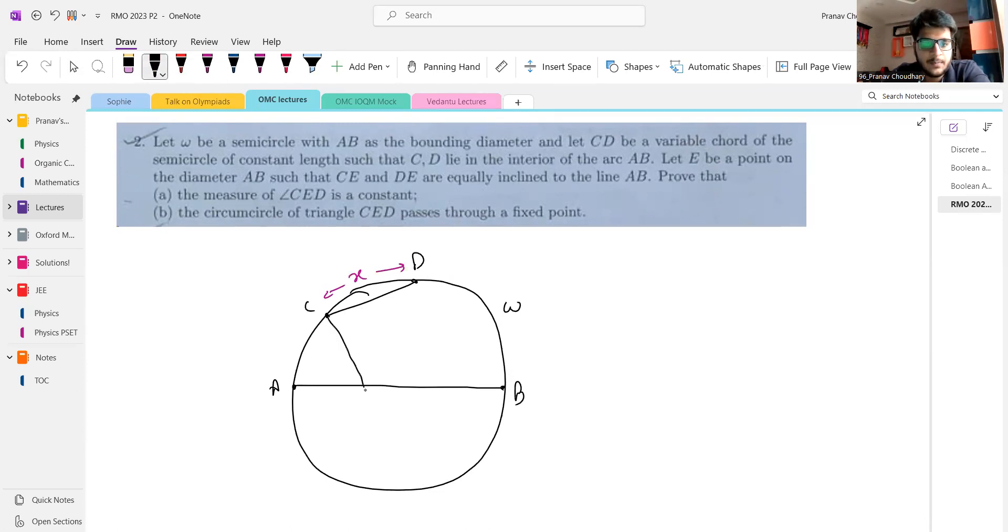You are given a point E such that these two angles are equal. We have this angle is theta and this angle is theta. We have to prove that the measure of this angle is constant. And we also have to prove that this circle CED passes through a fixed point.